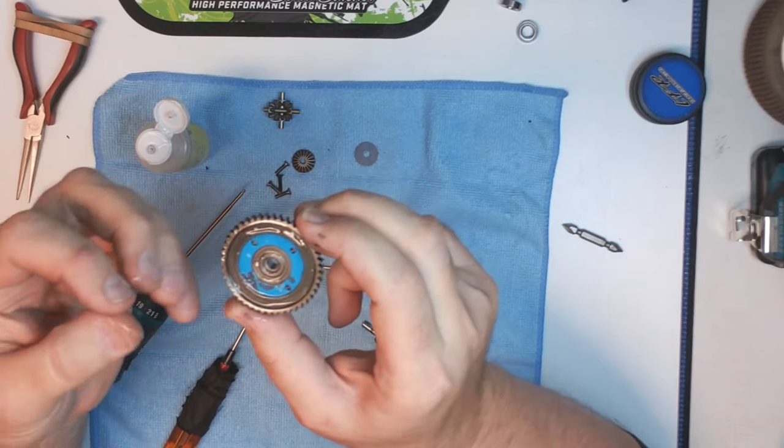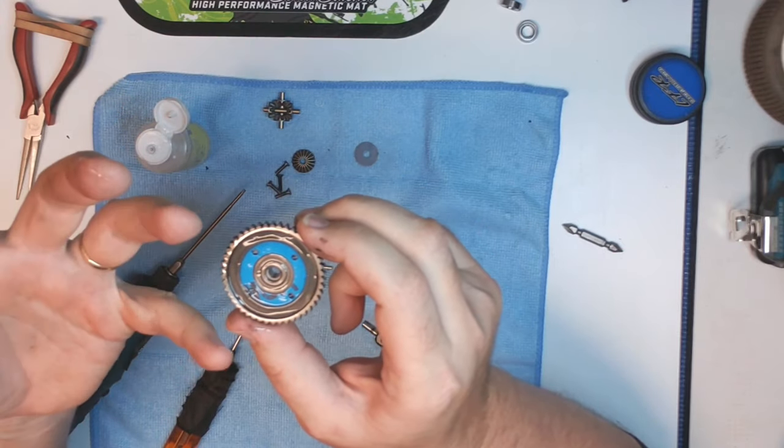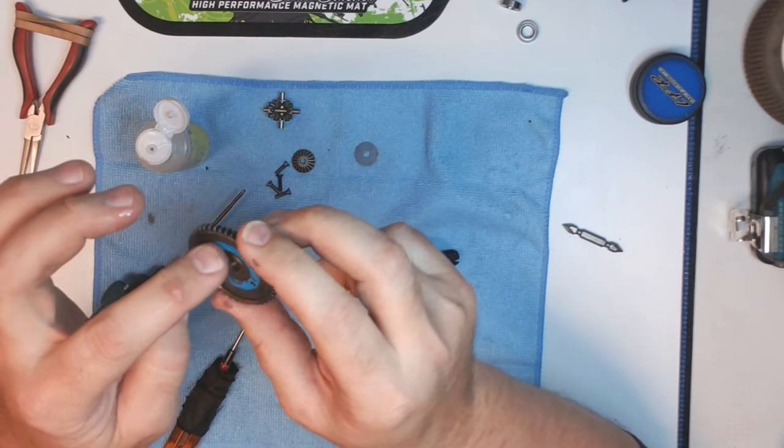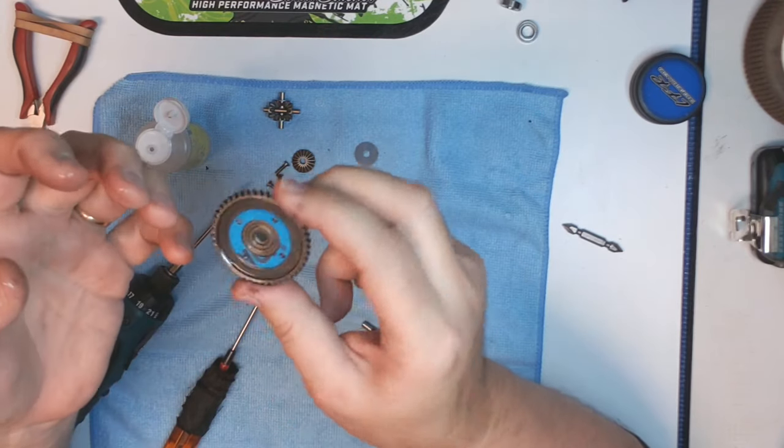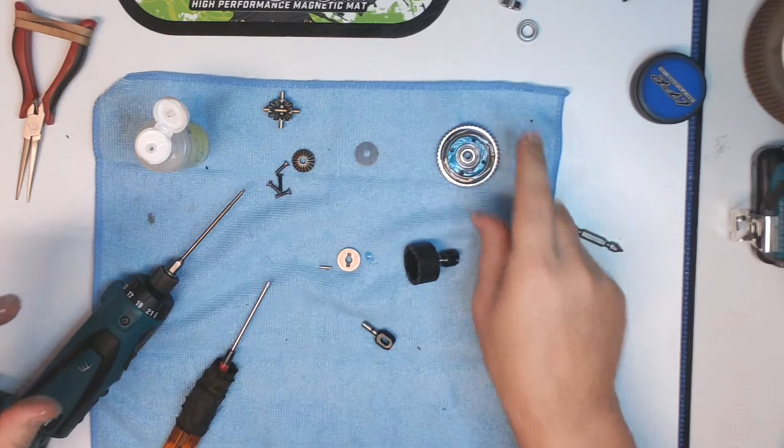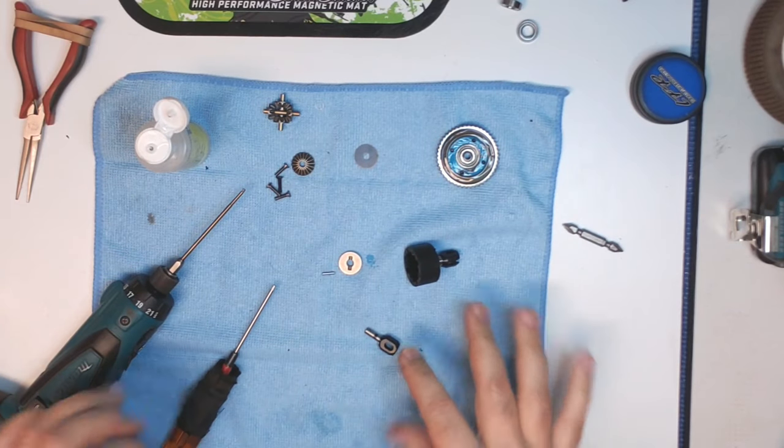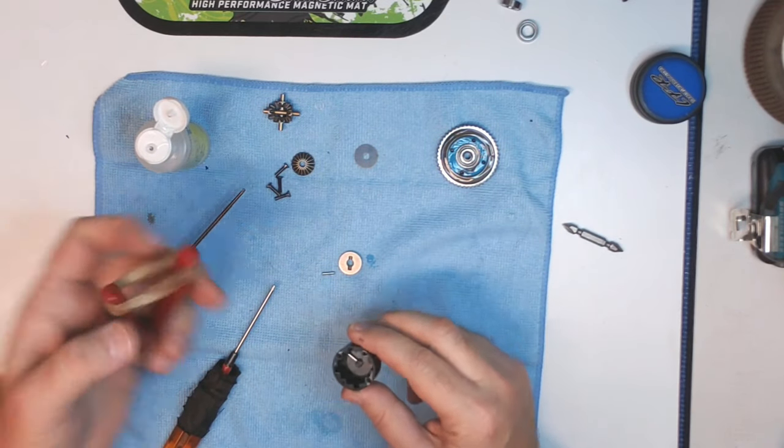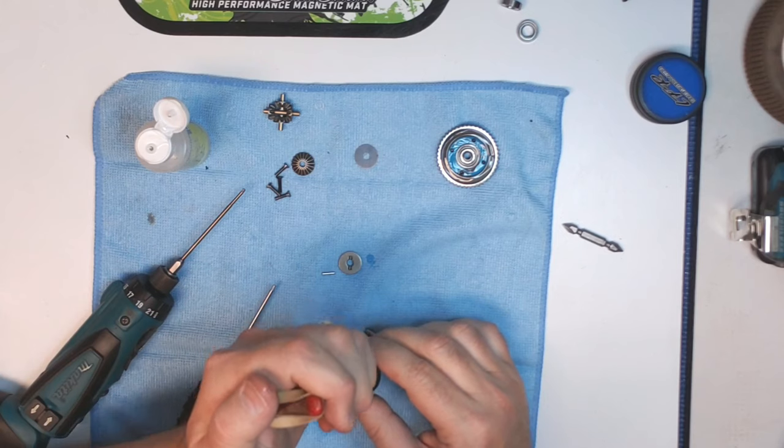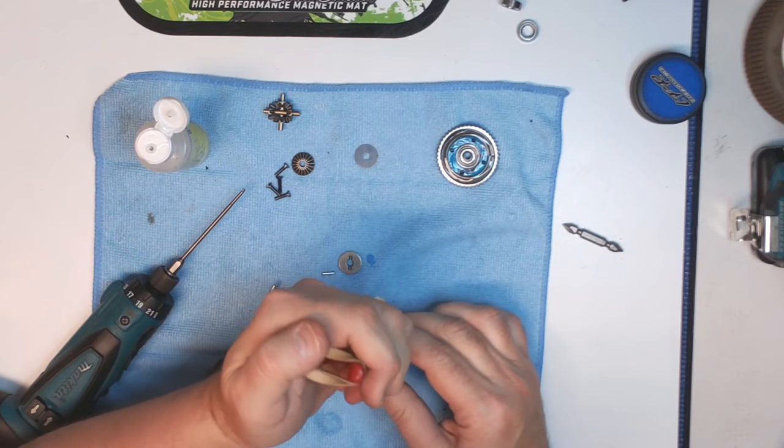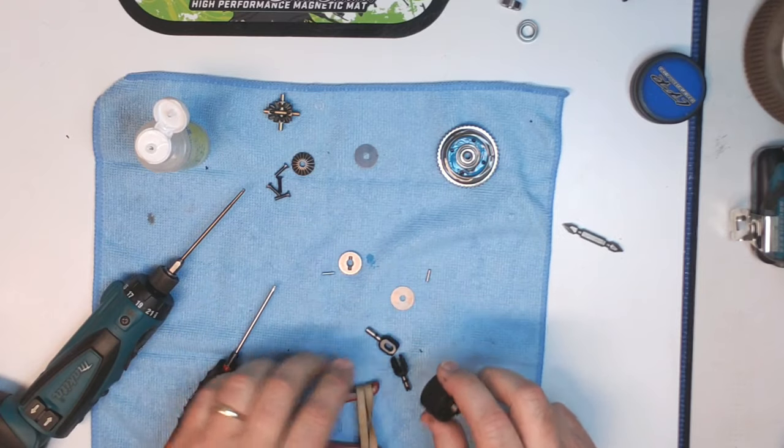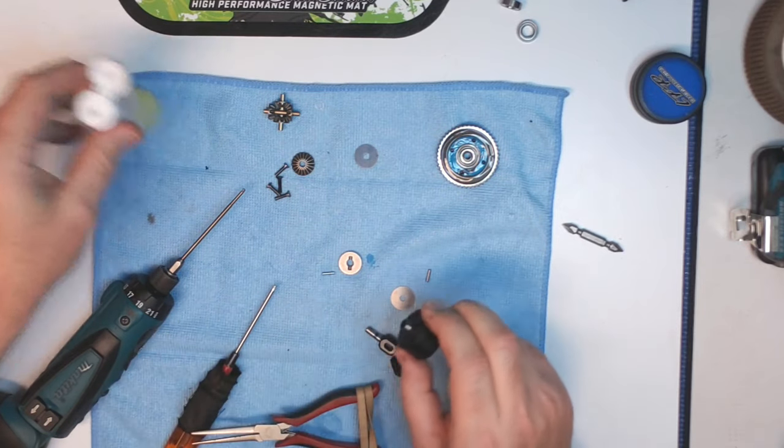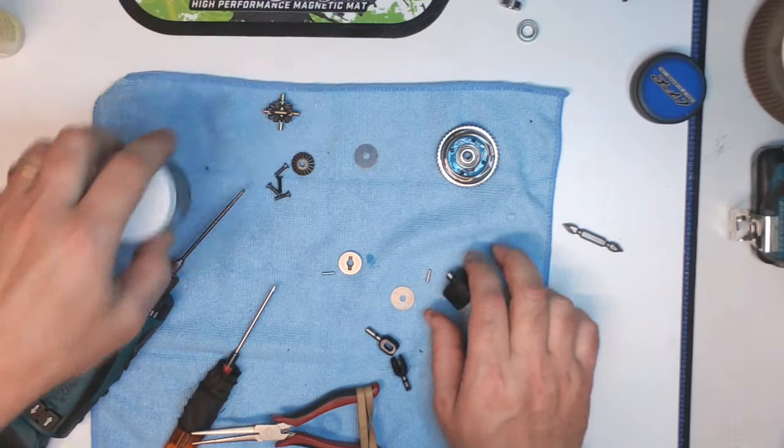Once the gasket has absorbed the oil and softened up and expanded, allowing it to begin that process while I'm building the rest of the diff will hopefully help to keep the spur gear and pinion gear just a little bit snugger throughout the early stages of the life of the diff.